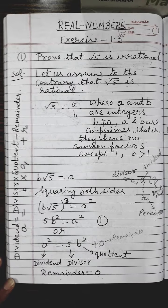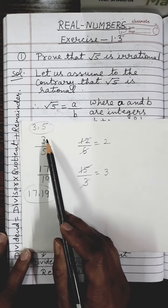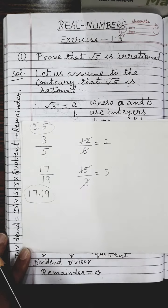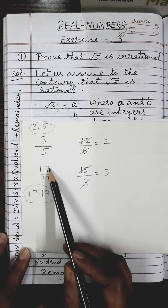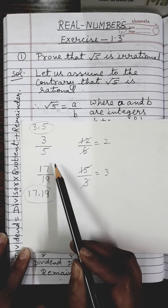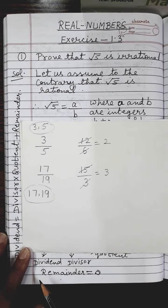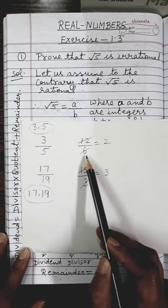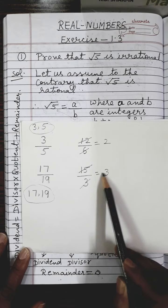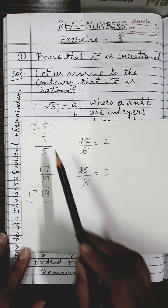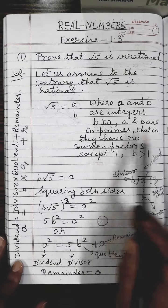What do we mean by co-prime numbers? For example, if I take 3 and 5 and divide them as 3 upon 5, I cannot cancel them — so 3 and 5 are called co-prime numbers. Similarly, 17 and 19: if I divide 17 upon 19, I cannot cancel them, so these are again co-prime numbers. On the other side, 12 upon 6 can be cancelled to get 2, and 15 upon 3 can be cancelled to get 3. You do not take these types of numbers; you have to take co-prime numbers. So a and b must be taken as co-prime numbers.